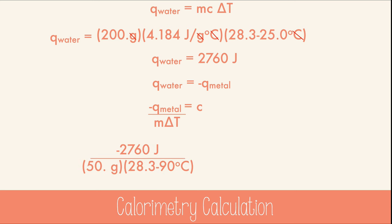Now we can plug in the data and calculate, and we'll get 0.9 joules per gram degree Celsius, which is the specific heat capacity of aluminum. Amazing.